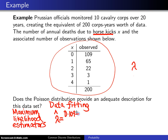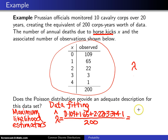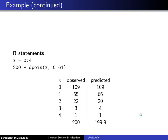We take the 109 zeros, add the 65 ones, add the 22 twos, the 3 threes, and finally the 1 four, then divide by the total number of observations, which is 200. That turns out to be 122 divided by 200, which as a decimal is 0.61. So the estimated value of lambda for this dataset is 0.61.